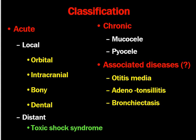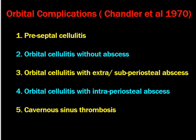When the infection spreads from the nose to the ear, throat, or towards the lungs or bronchus, orbital complications by far are the most common complications of sinusitis, especially from ethmoid sinusitis. This classification was described by Chandler et al. in 1970.